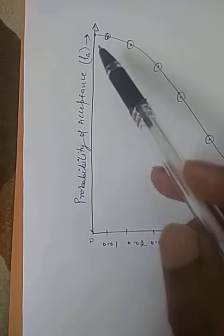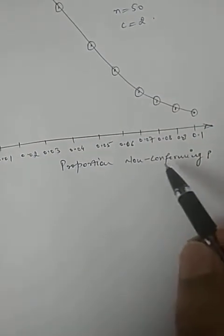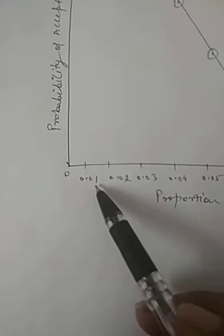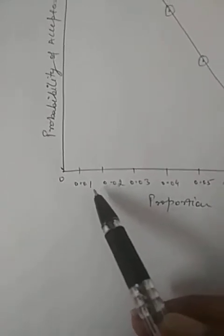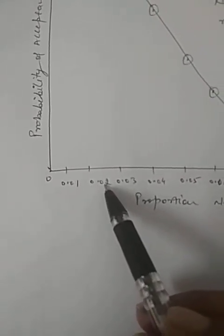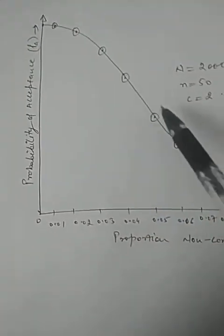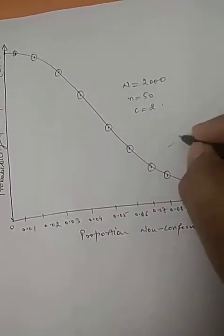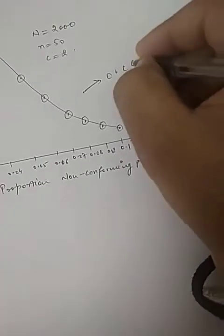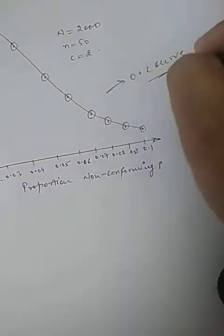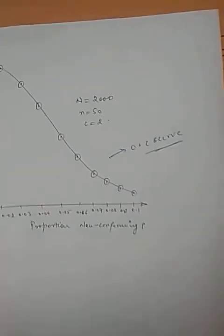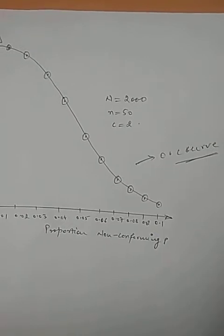We're drawing the graph where on one axis is probability of acceptance and the other is proportion of non-conforming. We calculate values according to the mean value, and the graph we draw is basically the OC curve. This is the Poisson method.